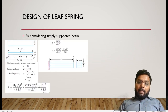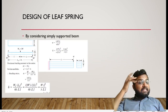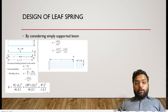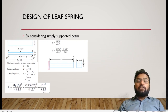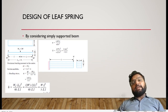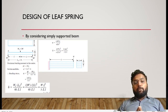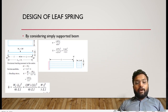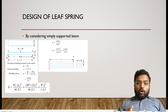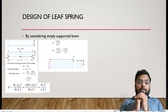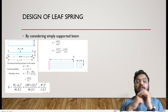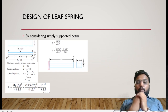Now let's find the equations by considering it as a simply supported beam. In a simply supported beam, the length is 2L and load is 2W. The bending stress will be the same as for the cantilever beam. However, the deflection will be different. Deflection for a simply supported beam is WL³/48EI, where W becomes 2W and L becomes 2L. Substituting, we ultimately get deflection = WL³/(3EI). So stress is the same — 6WL/(bt²) — but deflection is different.